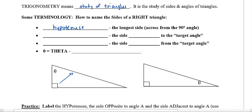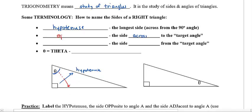Now, there are two other sides to this story. I'll label this too: hypotenuse. There is a side that is what I call across from the target angle. The target angle is the one we actually know, right here. So, this angle is the target one. The one across from it would be this side over here, and that's called the opposite.